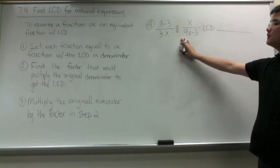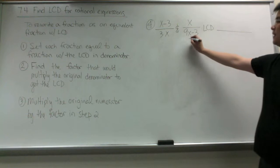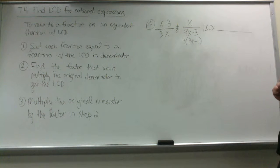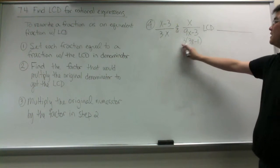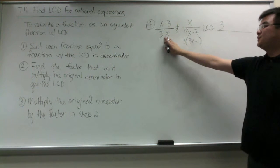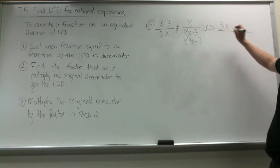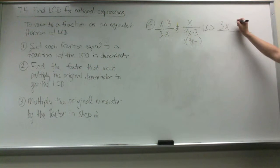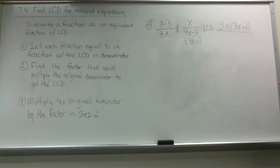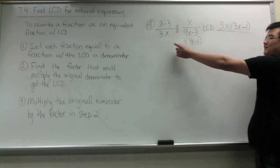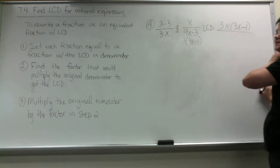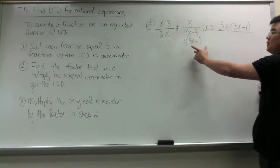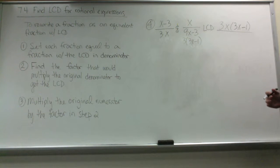In this next example we start by finding the LCD through factoring: we factor out a 3, getting 3 times 3x minus 1. Comparing the monomials, the LCD between 3 and 3 is 3. Since the variable x appears in one denominator but not the other, it automatically goes in the LCD. Similarly, the binomial 3x minus 1 is not in the other denominator, so it is also included. As a general rule: if a denominator has something the other does not, it automatically goes in the LCD, and matching monomials or binomials come in with the highest exponent.